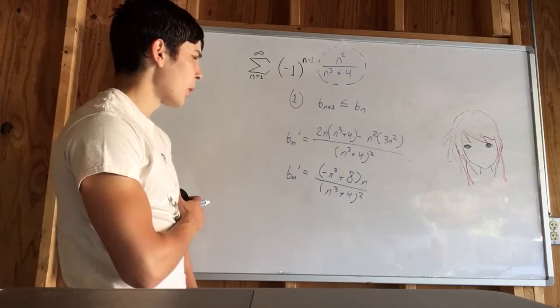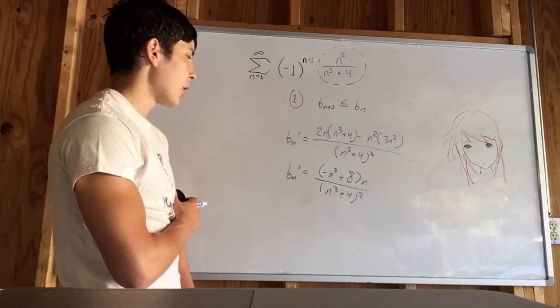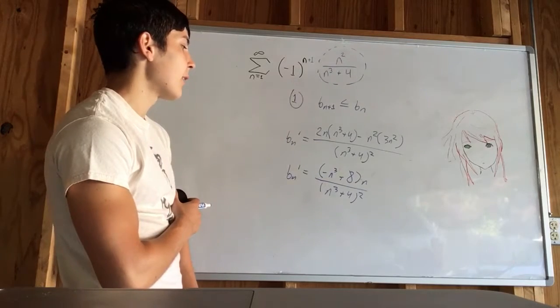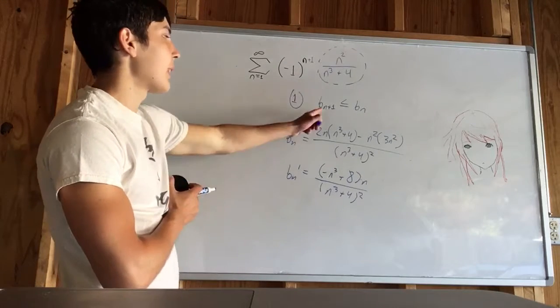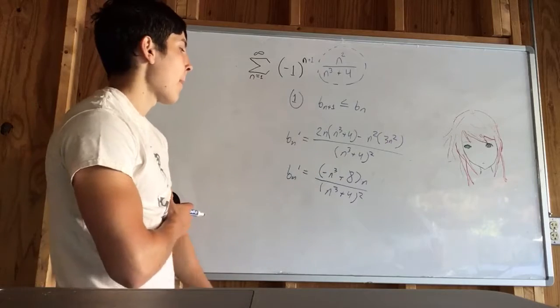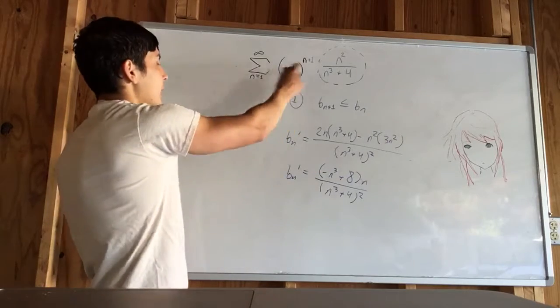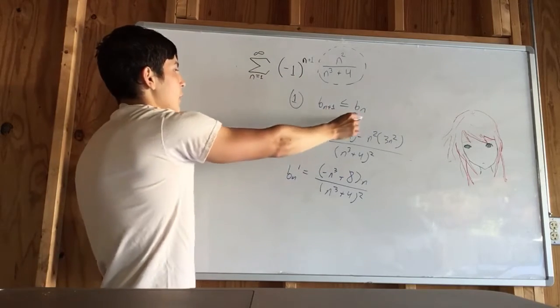So remember, what we're looking at here is our derivative, and we want our derivative to be negative in order to show that this is decreasing. In other words, that this is true.